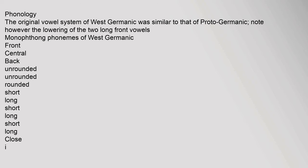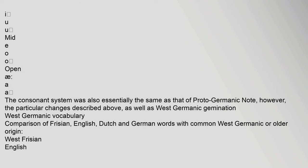The original vowel system of West Germanic was similar to that of Proto-Germanic, though note the lowering of the two long front vowels. The monophthong phonemes of West Germanic include front, central, and back vowels — both short and long — covering close vowels (i, u), mid vowels (e, o), and open vowels (a). The consonant system was also essentially the same as that of Proto-Germanic, with the particular change described above, as well as West Germanic gemination.